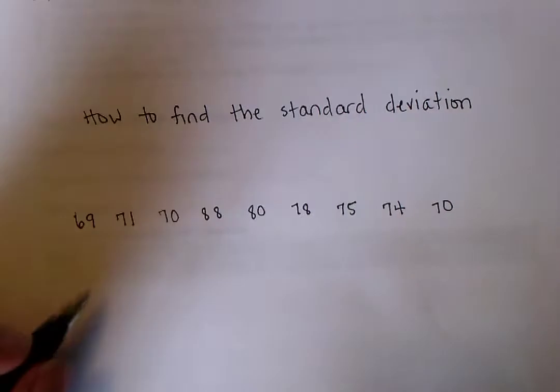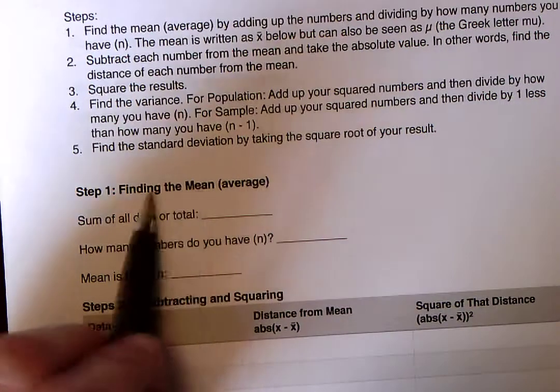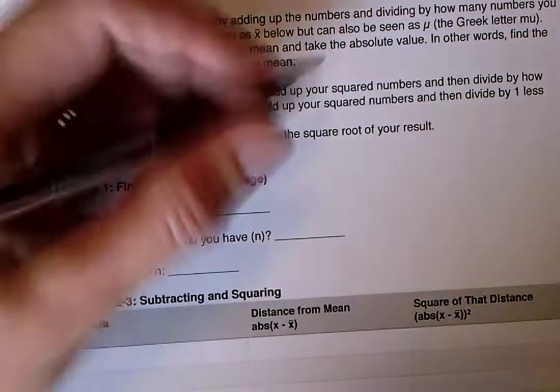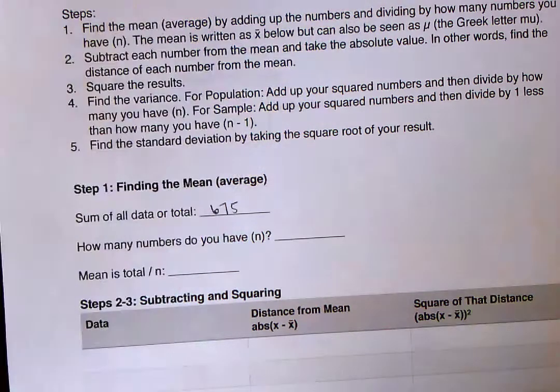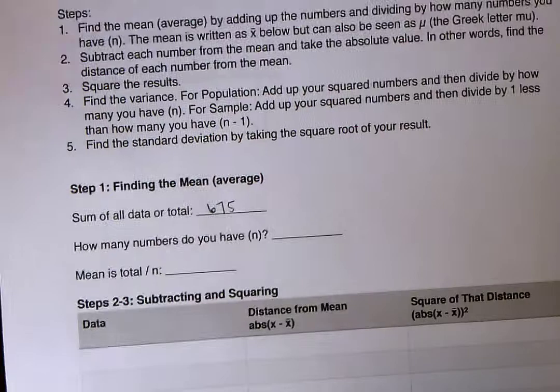I put all the numbers in here, and I ended up getting 675. So for this right here, the sum of all the data, we're going to go into step 1 here finding the mean, and it says the sum of all the data or the total is 675. How many numbers do you have?